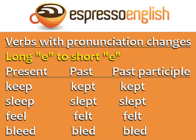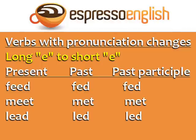Another group of irregular verbs is verbs with pronunciation changes. For example, long E to short E: keep, kept, kept; sleep, slept, slept; feel, felt, felt; bleed, bled, bled; feed, fed, fed; meet, met, met; lead, led, led.